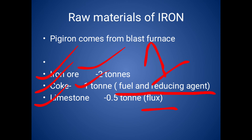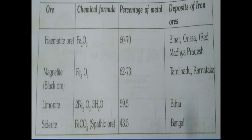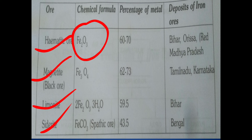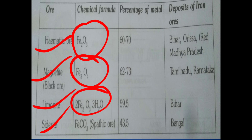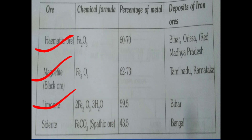A good iron ore should have a high percentage of iron and low gangue content, with low percentages of silica, aluminum, and manganese. Iron ore is available in four different forms: hematite, magnetite, limonite, and siderite.